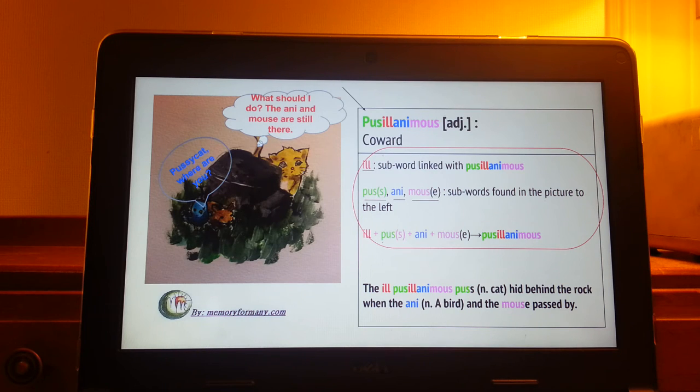First let's find the word Pus. Since Pus is a type of cat, you should be able to find it easily. If you said it hid behind the rock, you are right.